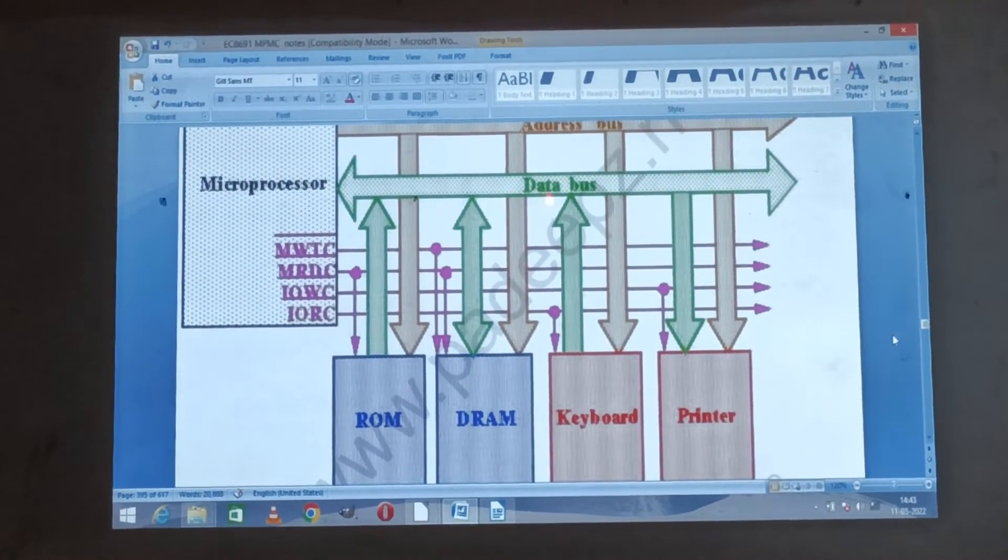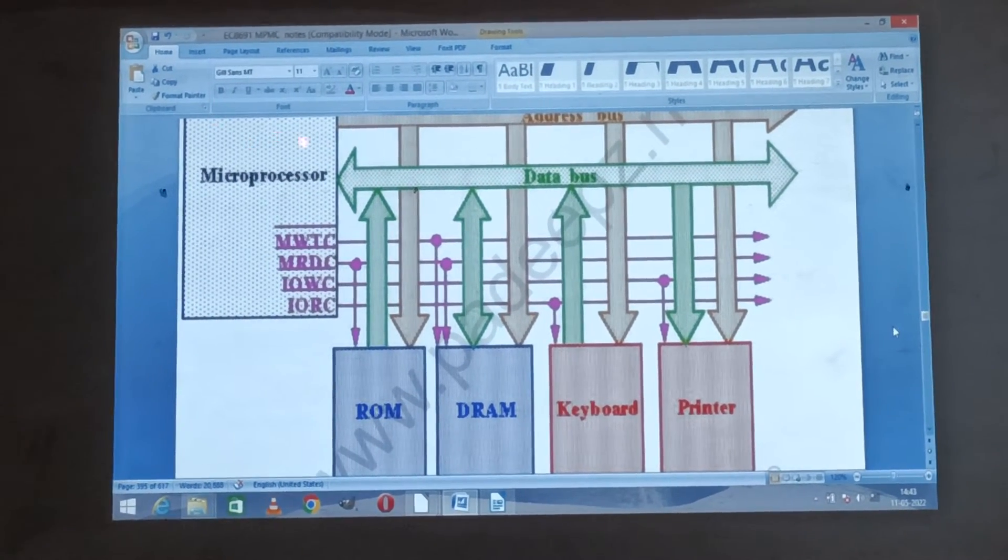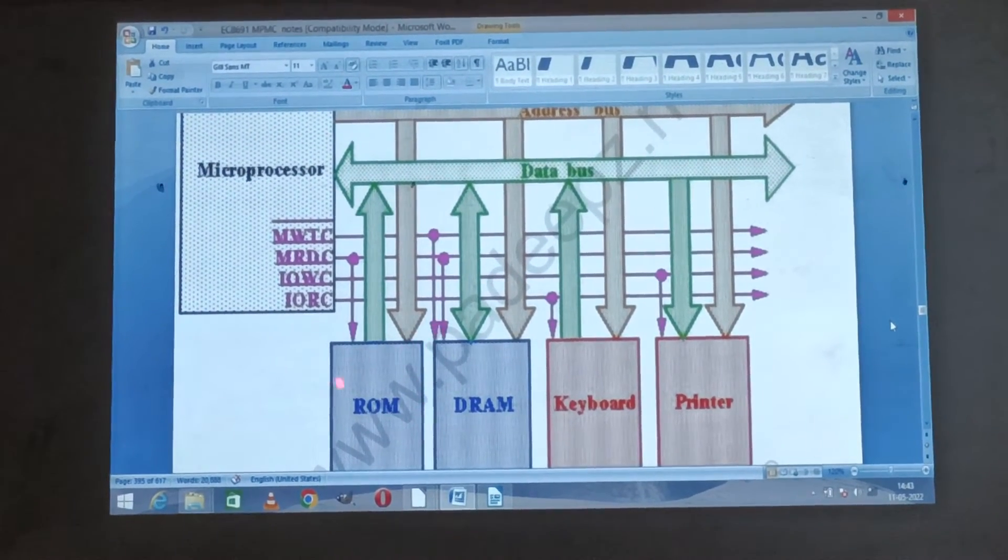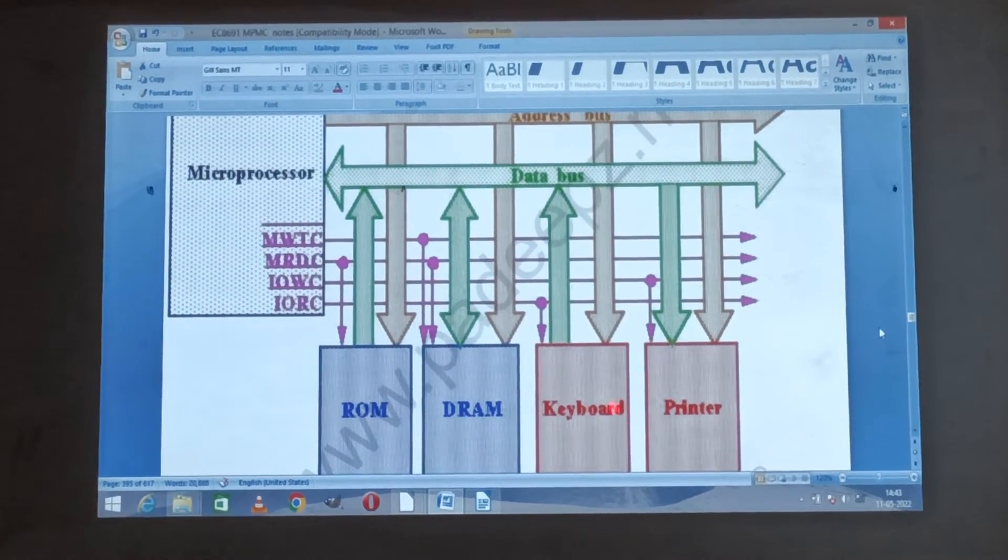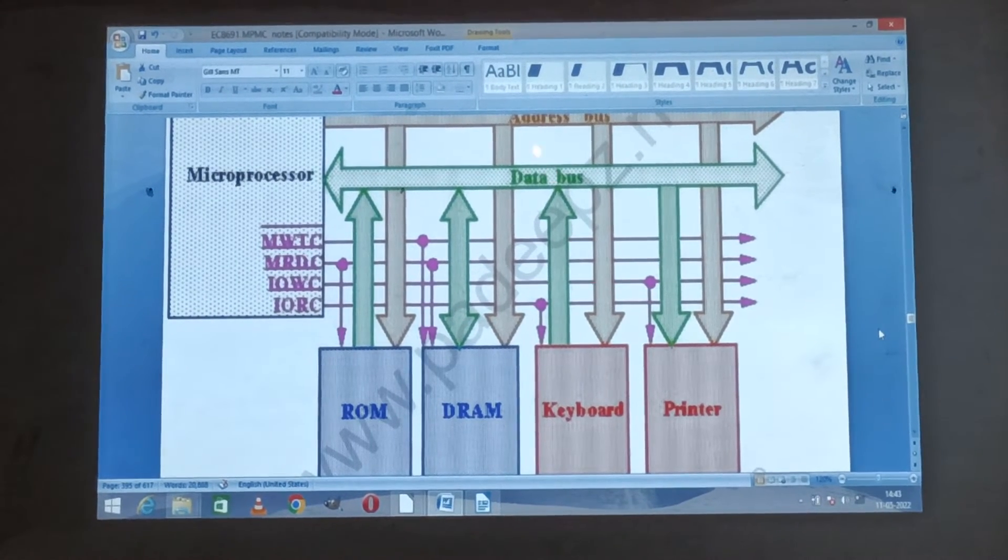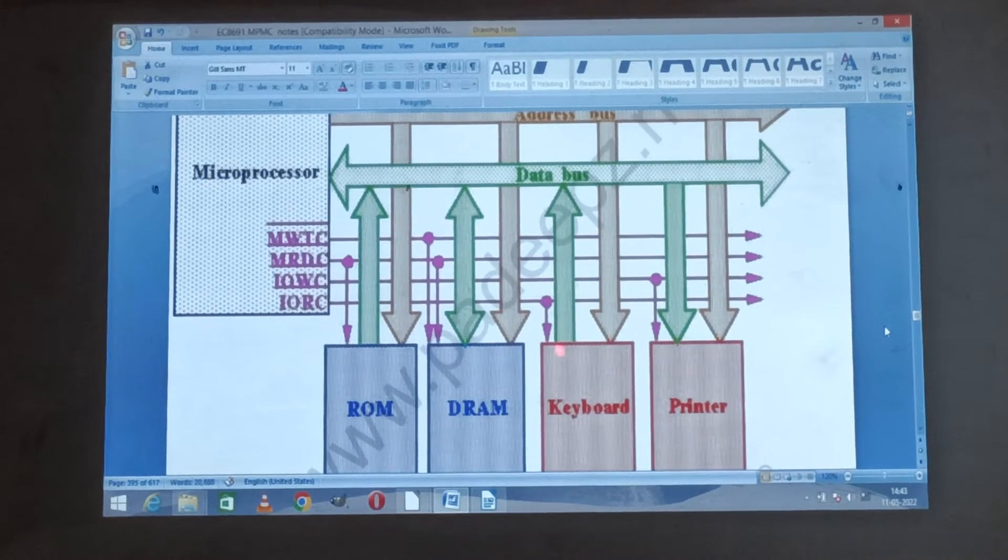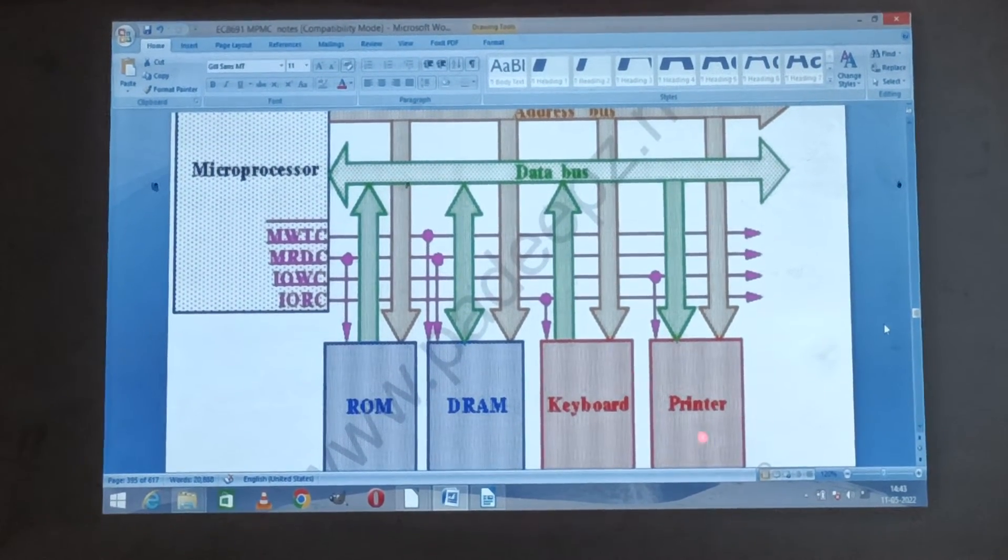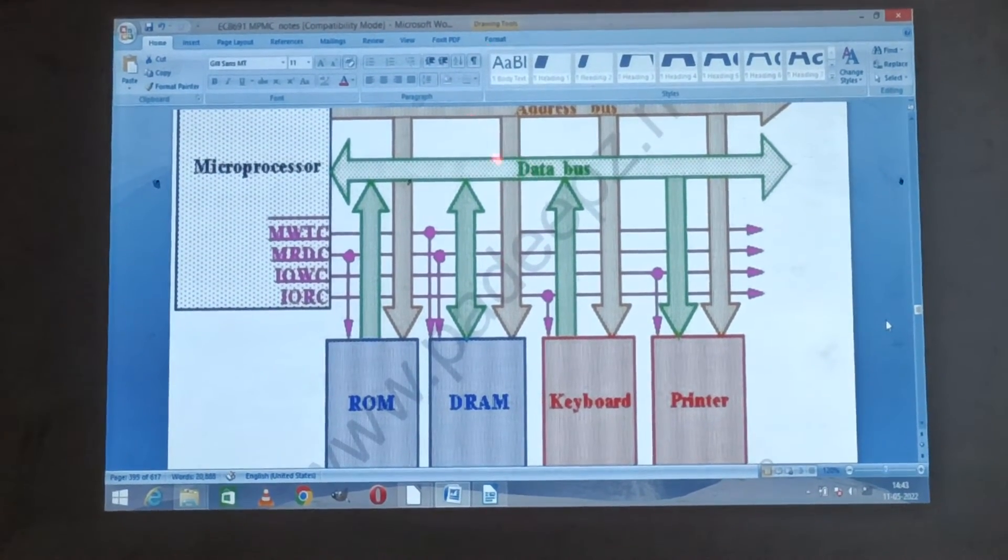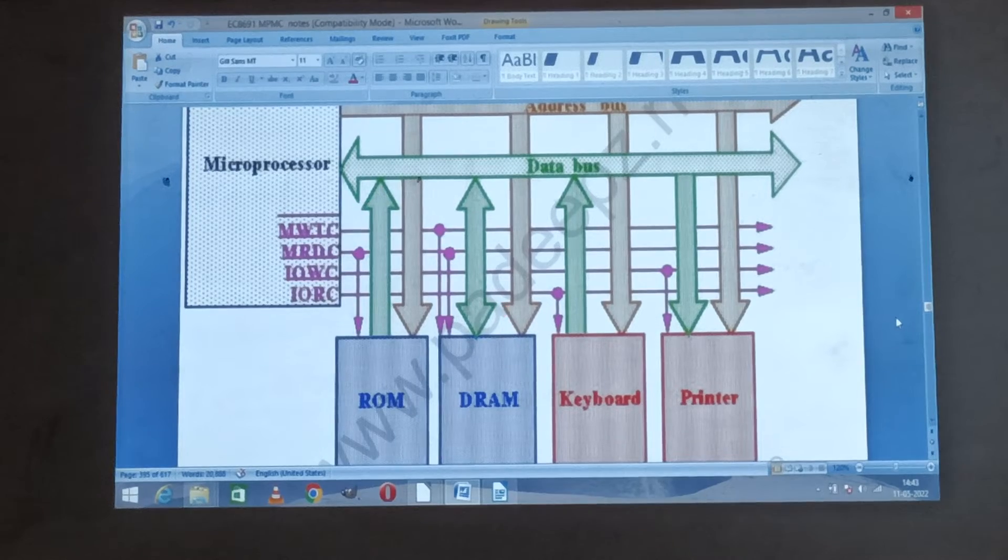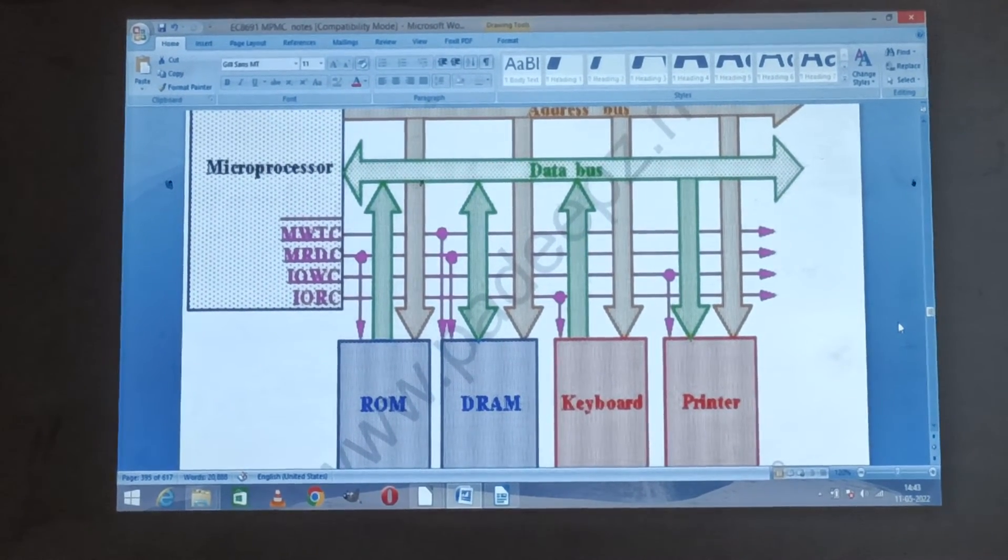The microprocessor is interfacing memory and input output devices. Input output devices means keyboard and printer is connected to the data bus buffer. The data is sent to the keyboard and output result is connected to the printer circuit. A 20-bit address bus is available in microprocessor unit. This is the concept of memory interfacing and input output interfacing.